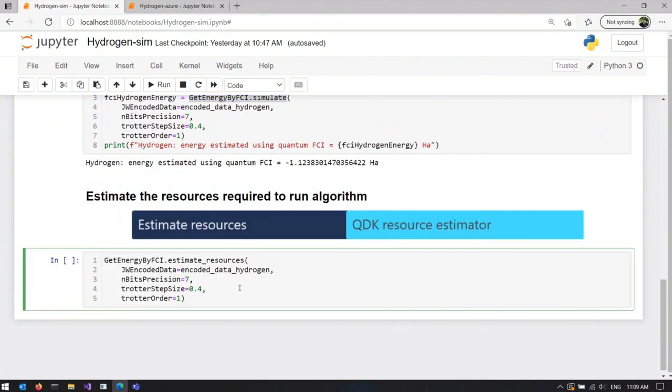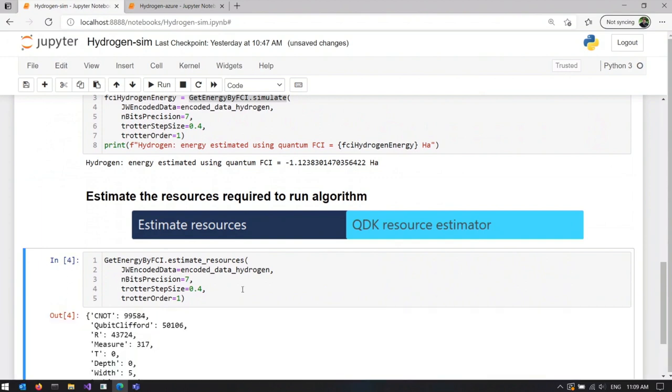For the next step, we are going to estimate the resources necessary to run the same code on the quantum device. You see that we are using the same Q# code, just with a different call, estimate resources instead of simulate.